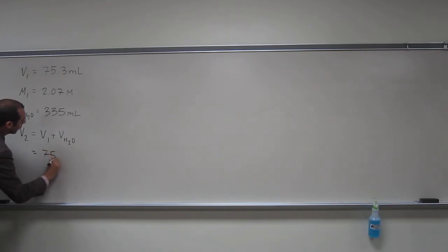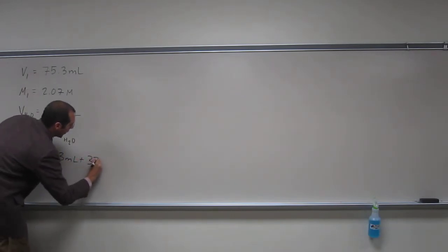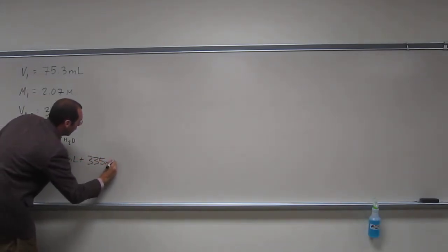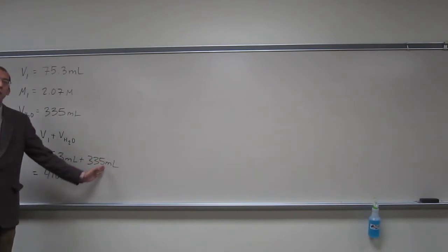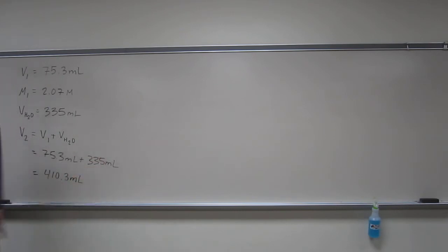So, 75.3 mils plus 335 mils, 410.3. And of course, actually, sig figs are going to cut off there. Okay, so we'll keep that in mind for later.